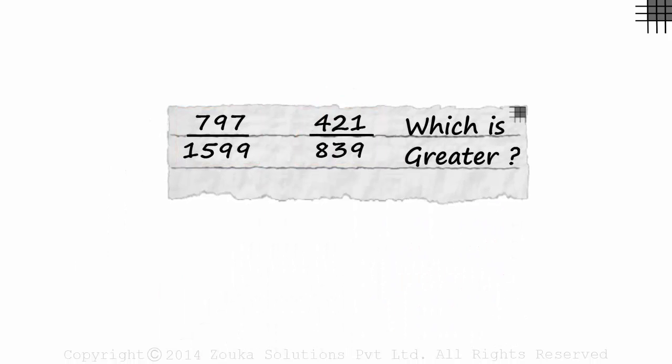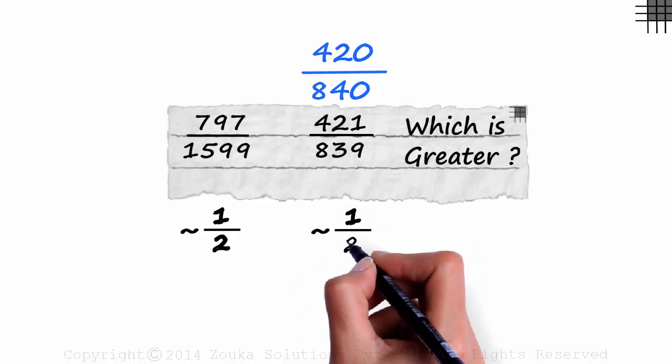Here's another problem. Which one is greater? Making the denominator same and finding the products do not make sense here. Looking at such questions should make you realize that there is a better way to solve these. Let's use the approximation technique we saw. The first fraction is approximately 800 by 1600, which is around half. And the second one is around 420 by 840, which is also approximately half.